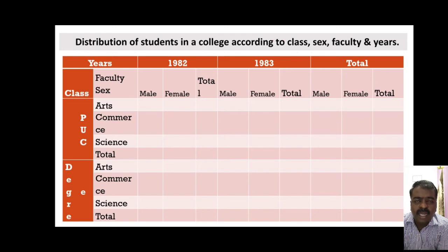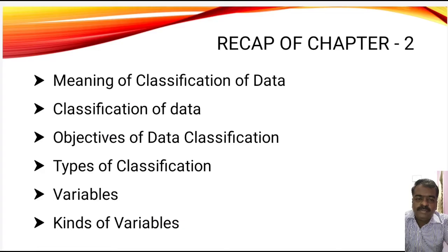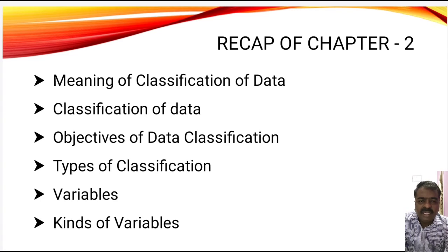This was a broad classification of the different types of tables used in tabulation. With this, we have come towards the end of Chapter 2. Let us recap what we have discussed in Chapter 2, Classification and Tabulation, of the subject Quantitative Analysis 1 in the BCom program. We started with the meaning of classification of data.